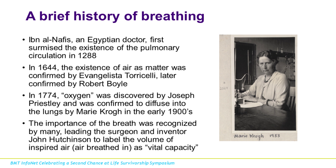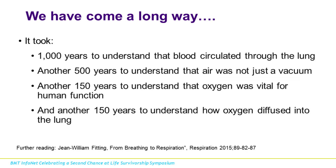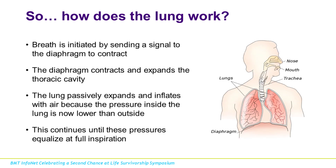John Locke reasoned that air was necessary for proper functioning of the circulation. In 1774 — nearly 2,000 years after the Greeks — oxygen was discovered by Joseph Priestley. It wasn't until the early 1900s that we realized oxygen diffused into the lungs. It took 1,000 years to understand blood circulated to the lungs, 500 years to understand air had matter, 150 years to realize oxygen was vital, and another 150 years to figure out how oxygen entered the body through the lungs.